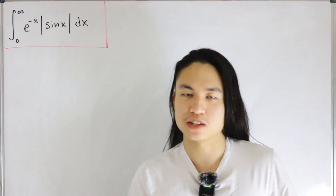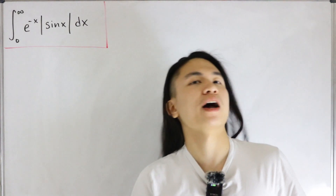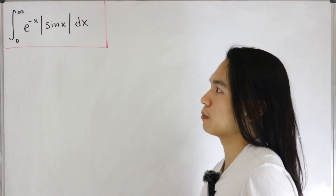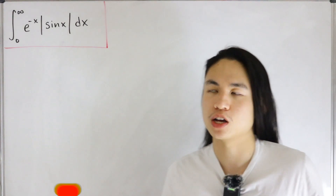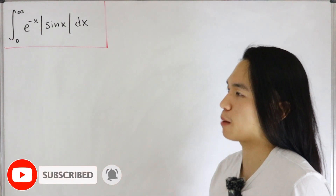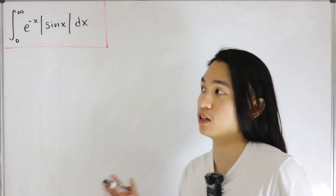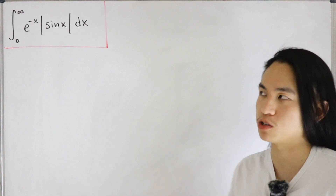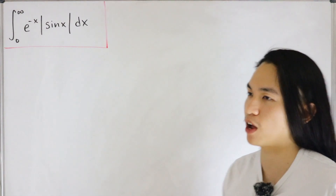This is interesting because if I were to exclude the absolute value of sine, that's actually a very common calculus 2 problem where you need to utilize integration by parts. But because we have the absolute value of sine, that actually makes things a little bit different and challenging, since we're dealing with positives with that absolute value sine included.